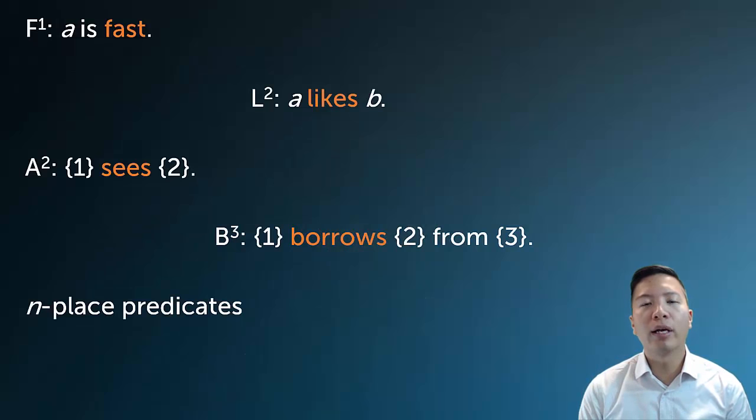So predicates we're already familiar with, like F, A is fast. Now notice this predicate has the superscript 1 and that indicates that it is only one place. Here, we have L² and A², and these are two-place predicates. So two different subjects go into them, and the way and order they go into them is determined by the abbreviation scheme.